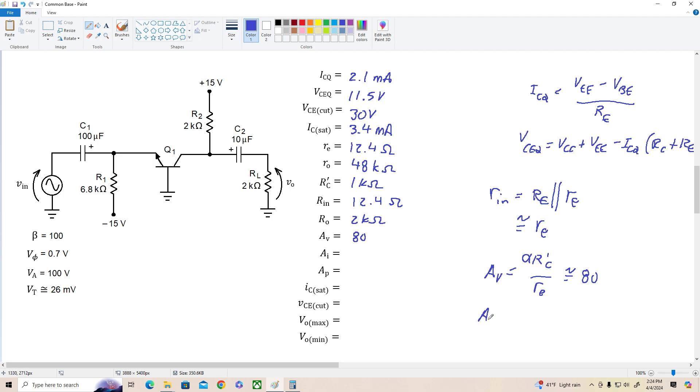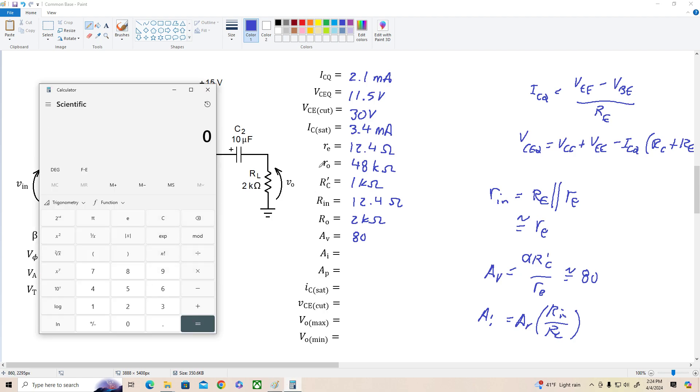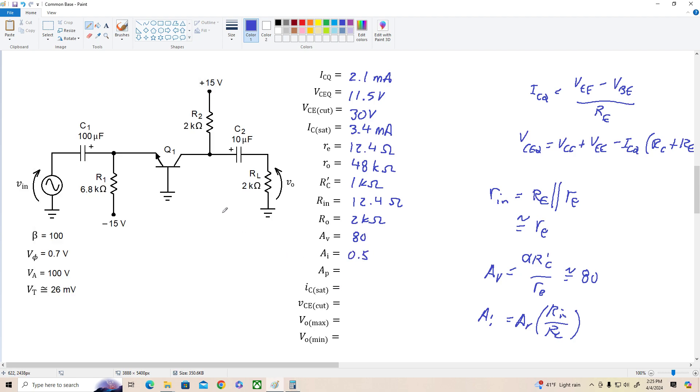Remember current gain now is equal to AV times R in over R L. So R in is pretty low, right? The input resistance is 12.4 ohms. So 12.4 divided by the load resistance, 2,000, is 0.0062 times the voltage gain of 80. So times 80 is, oh, a current gain of roughly 0.5, let's call it. Now remember, the current gain of the common base is always less than 1, so this is not unexpected. A current gain of 0.5, typical.